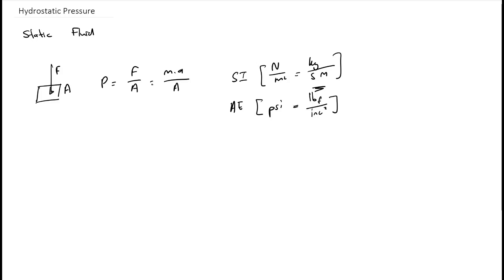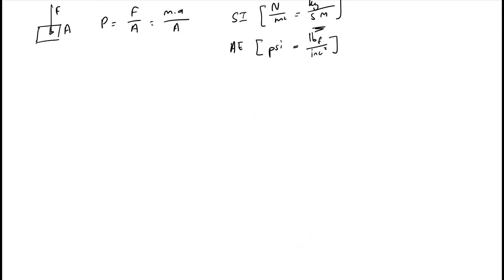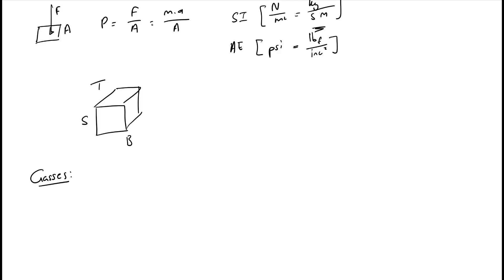Let's look at the pressure in fluids — liquids and gases — as a start, so we can get to the hydrostatic pressure in static liquids. Here we have a system: a cube. We define the cube with the top T, the bottom B, and the sides being S. Let's start with the easiest of the three, which I would say would be gases.